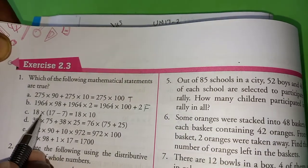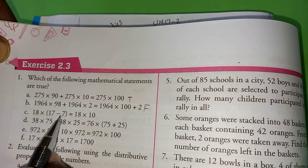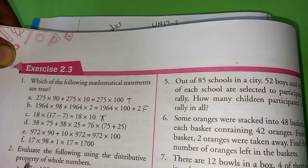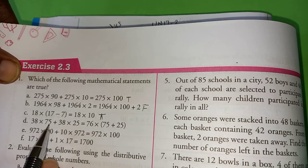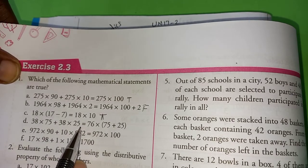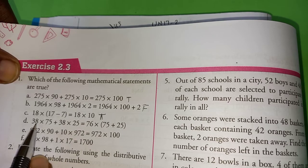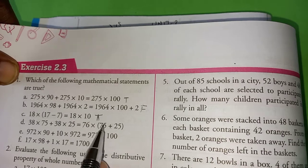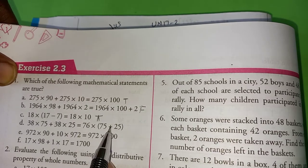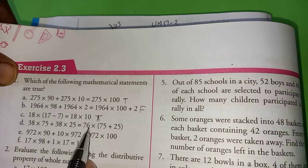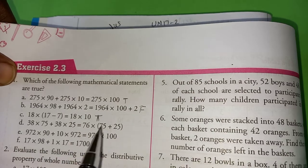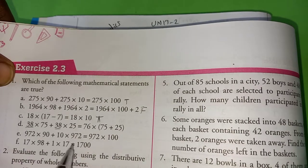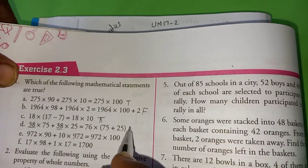And here it is 18 into 17 minus 7. 17 minus 7 is 10. So this is also true. Next, 38 into 75, 38 into 25. We have to take 38 common. 75 plus 25 is 100. But what they have given here? 75 plus 25, 100. But 100 we have to multiply with 38, but here they give 76. 38 is the common. 75 plus 25 they added, but they multiplied with 76. So this is false.